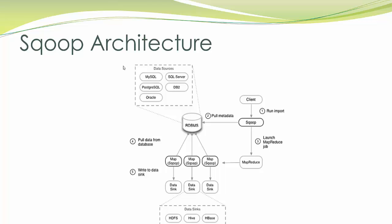Here are the basic steps of the Sqoop architecture. You run the Sqoop client with the import or export option. Sqoop pulls the metadata from the respective table or database specified. Then it creates a Java process, converts it into a class file, and launches a MapReduce job. By default that MapReduce job starts four map tasks — I mistakenly put three in the diagram, but it's four by default — and you have the option to increase or decrease that number based on system memory. The data sink can be HDFS, Hive, or HBase based on your choice.